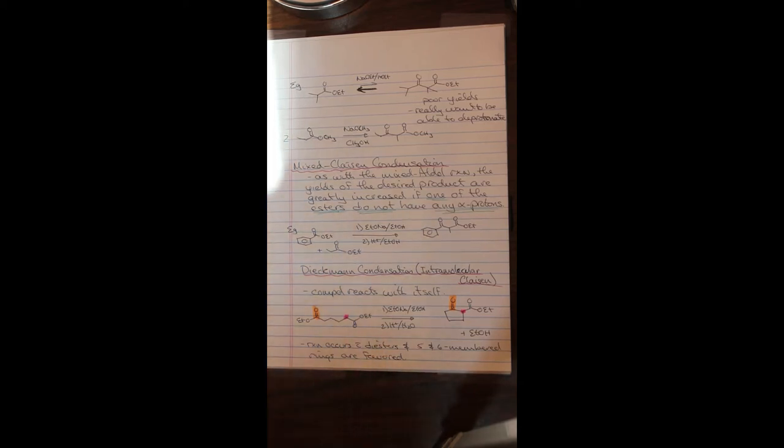The enolate is generated, it reacts, it forms the cyclic system, and we now have an alpha beta dicarbonyl system that is part of a ring structure. As with every other discussion we've had about ring formation reactions, five and six-membered rings are going to be favored in these types of reactions. So that is this.